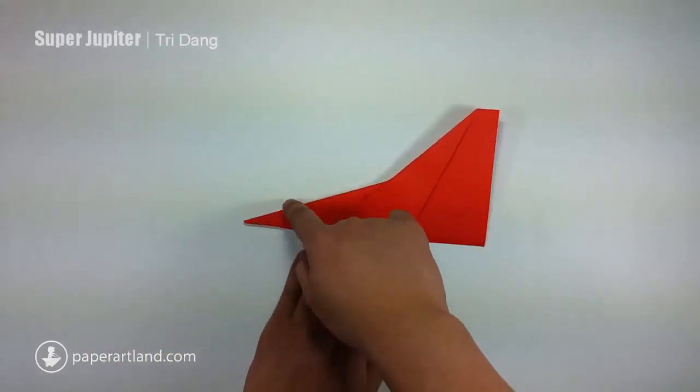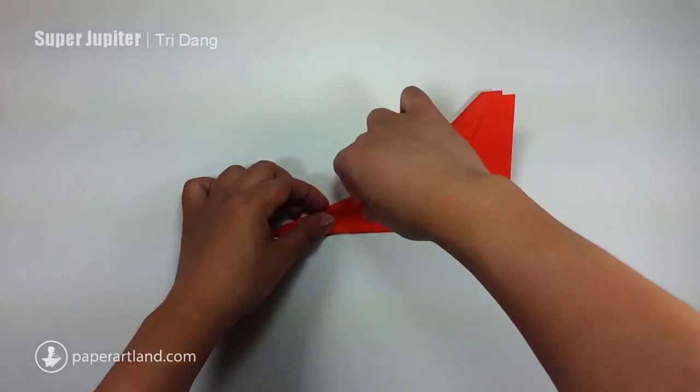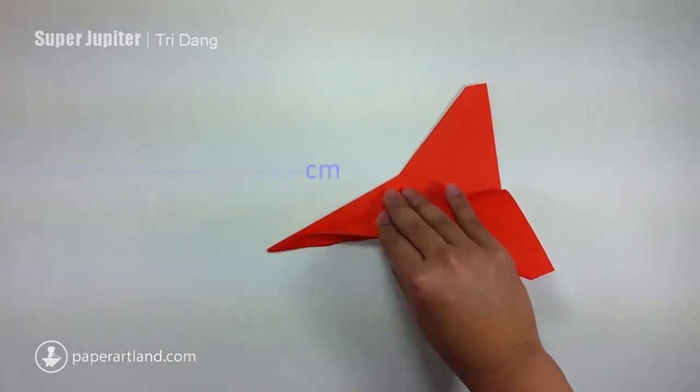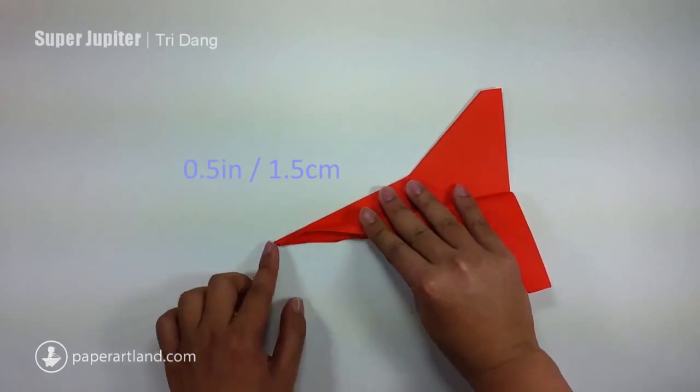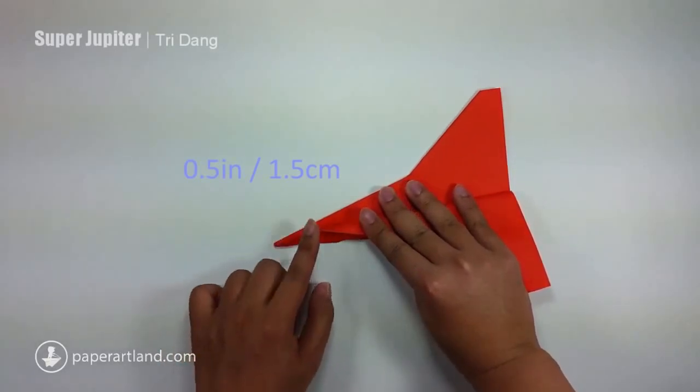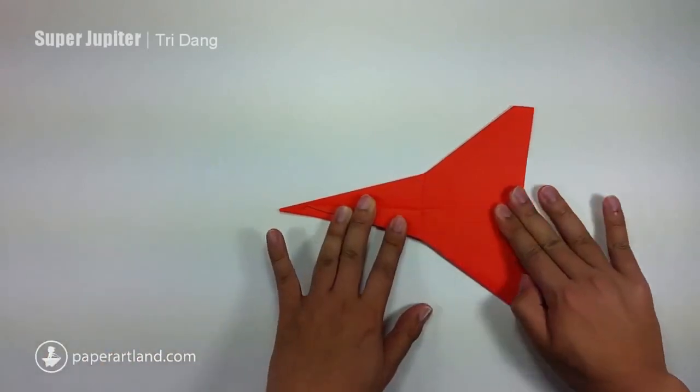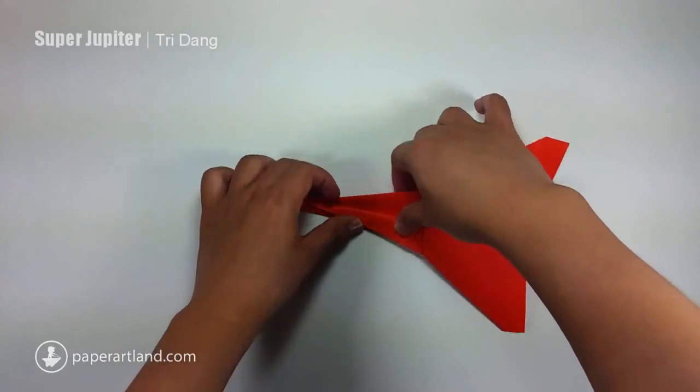Next step, I start from this edge, I fold to this edge. However, to make the plane look nicer, I will estimate about half an inch from this point along this edge. I will fold this one down to create the wings. And I will repeat the same fold for the opposite side.